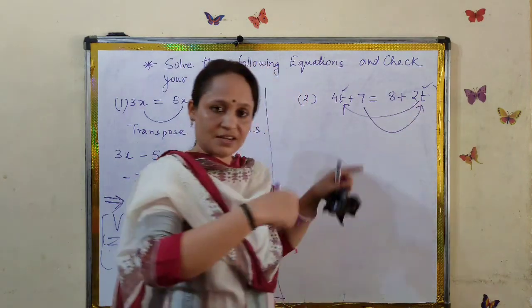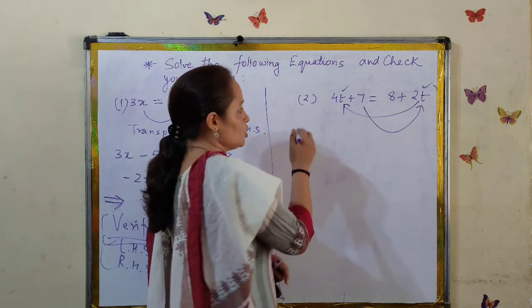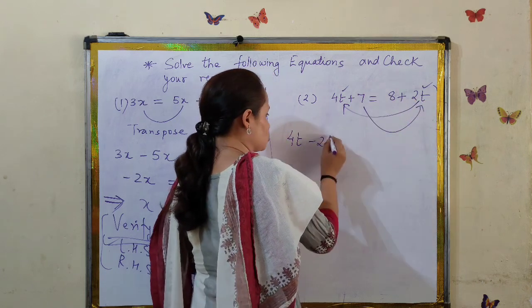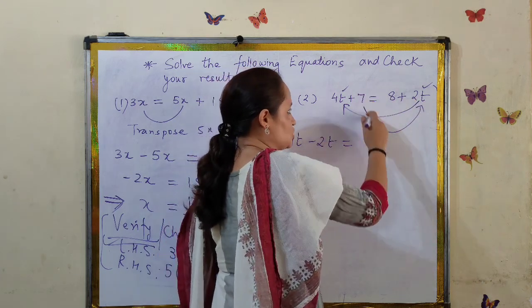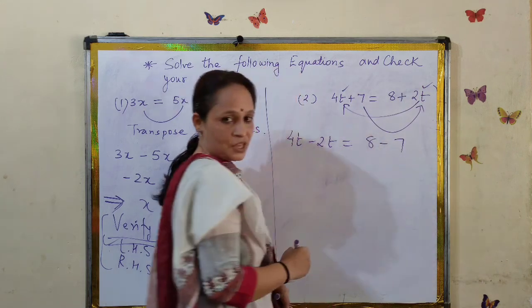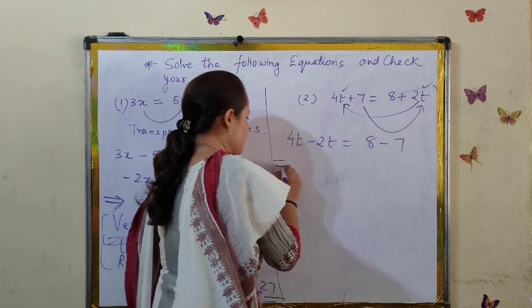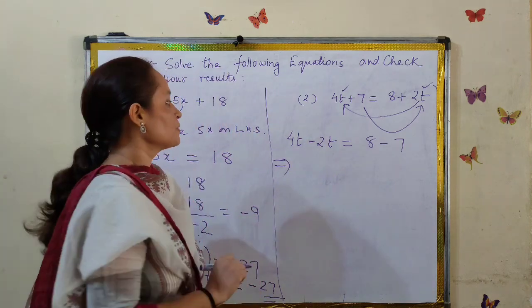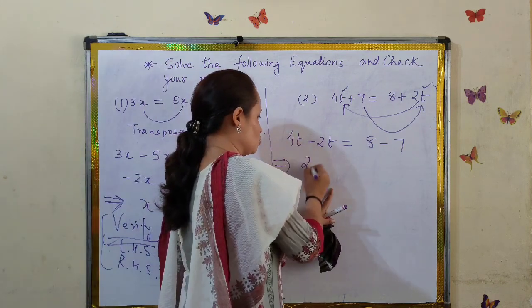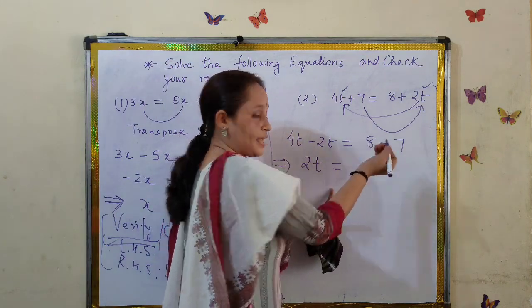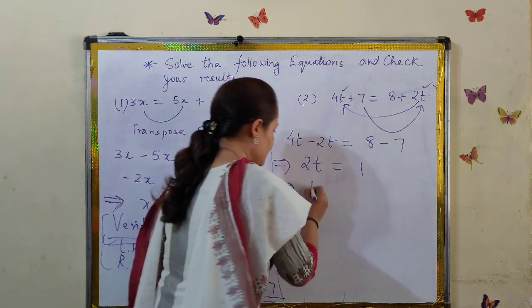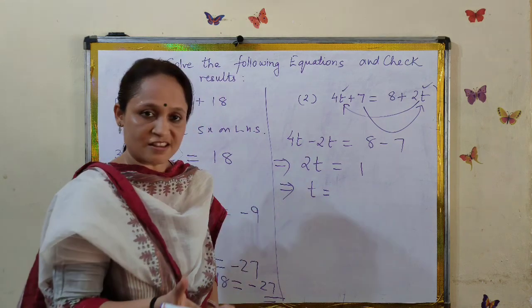We keep like terms on one side. We bring 2t to the left side, so its sign gets reversed. We bring 7 to the other side, so its sign also reverses. So we get 4t minus 2t equals 8 minus 7. That gives us 2t equals 1.